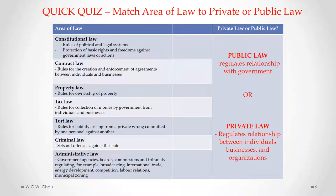Let's do a quick quiz to illustrate the difference between public law and private law. On the left-hand side of the screen, you will find different areas of law, and your challenge is to determine whether each is public law or private law. Please pause the video to attempt this quiz. Constitutional law is considered to be public law — these are the rules that set up our political and legal system and protect our basic rights and freedoms, which in Canada we call the Charter of Rights and Freedoms. Those rules regulate our relationship with government, so that's why it's considered public law.